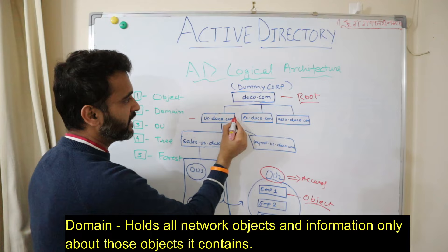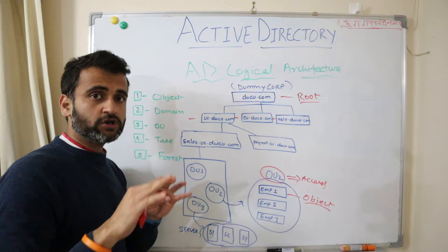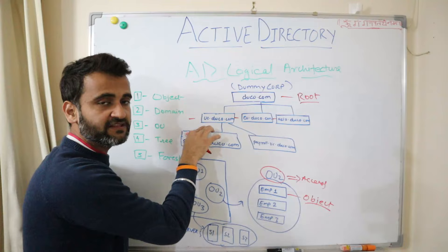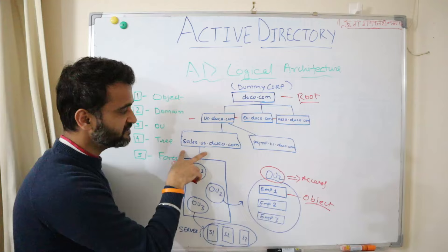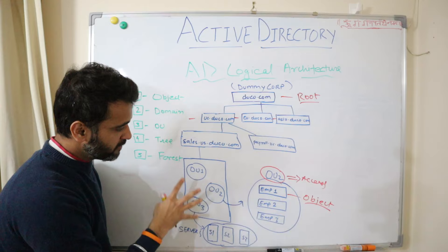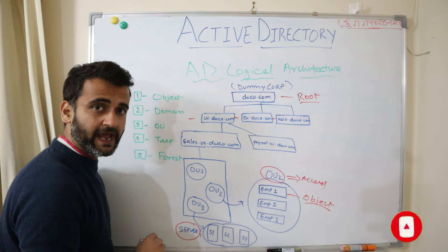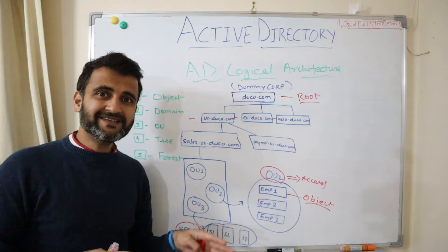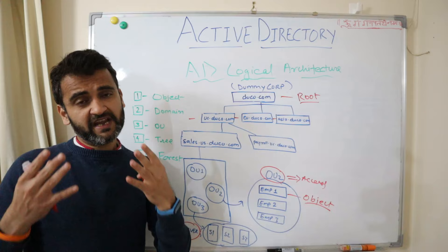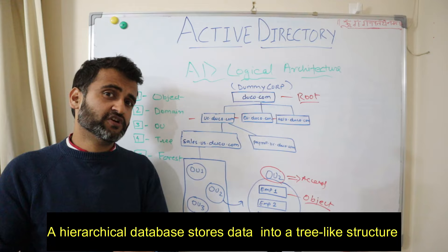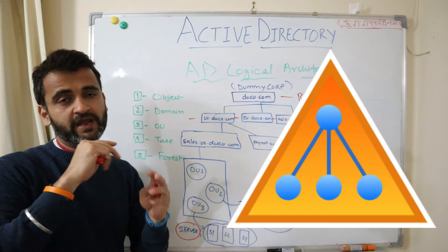Then you have sub-domains. We are talking about Active Directory — don't confuse it with DNS. Within the root domain we have the US sub-domain, and within the US sub-domain we have two different sub-domains: one for sales and one for payroll. Under the sales sub-domain we have organizational units OU1, OU2, OU3. Under OU2 we have all the employee details added as objects, and under OU3 we have servers — server one, server two, server three. Object could be anything: an employee, a printer, or a server. As you can see, it looks like a tree structure. Active Directory is a database of sorts — a hierarchical database management system with parent-child relationships between your root domain, sub-domains, organizational units, and objects.